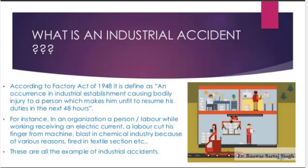What is an industrial accident? According to the Factories Act 1948, it is defined as an occurrence in an industrial establishment causing bodily injury to a person which makes him unfit to resume his duties in the next 48 hours. For instance, a laborer receiving an electric shock, a laborer cutting his finger on a machine, a blast in a chemical industry, or a fire in a textile section. These are all examples of accidents occurring in a company.